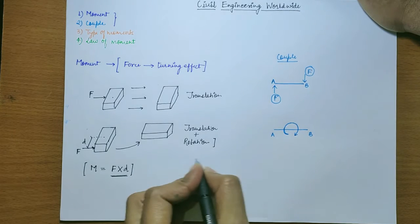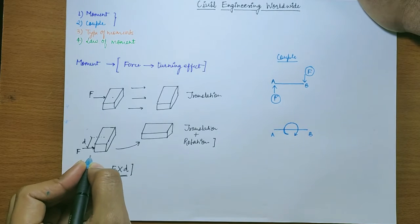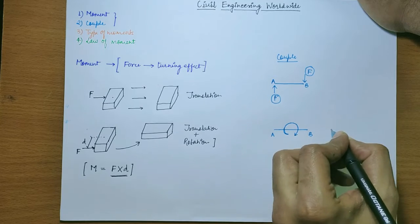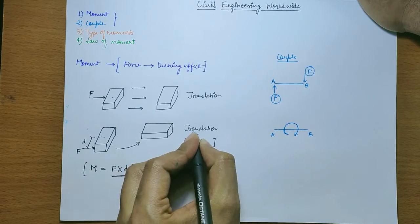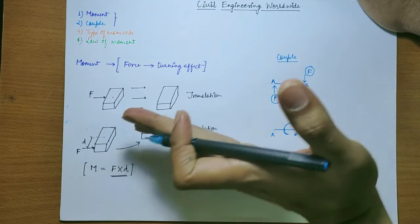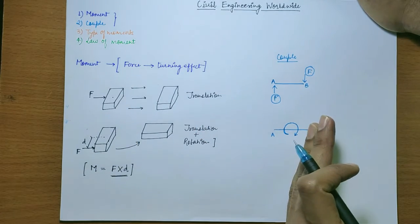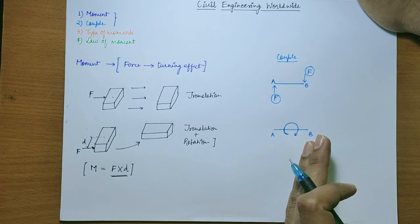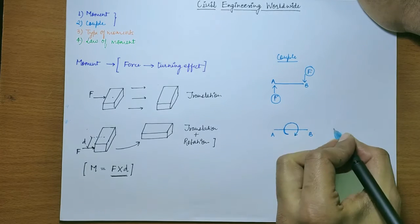Now you can clearly see the difference between the moment and the couple. Moment causes translation and rotation. The brick shifted towards the right and also rotated. But in case of couple, when the couple is acting on an object, it only produces rotation.